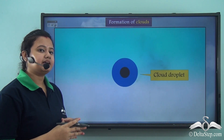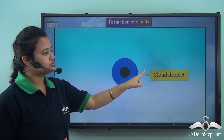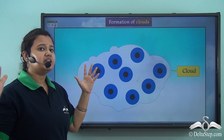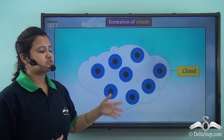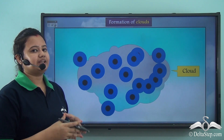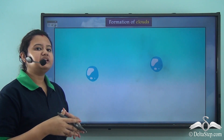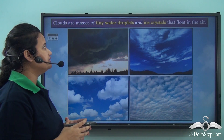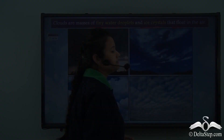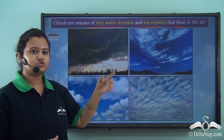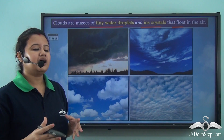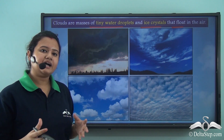These tiny water droplets remain suspended in air and combine with other water droplets to form a single cloud droplet. Cloud droplets eventually combine with other cloud droplets to form a single large cloud. Clouds are formed due to condensation of water vapor in air. Clouds refer to tiny masses of water droplets or ice crystals that float in air — they can form from water droplets or freeze into ice crystals at higher altitudes.